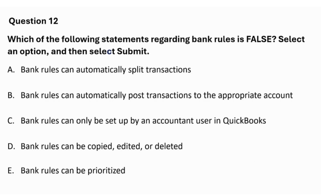Which of the following statements regarding bank rules is false? Select an option and then select Submit. A: Bank rules can automatically split transactions. B: Bank rules can automatically post transactions to the appropriate account. C: Bank rules can only be set up by an accountant user in QuickBooks. D: Bank rules can be copied, edited, or deleted. E: Bank rules can be prioritized. The false statement is C: bank rules can only be set up by an accountant user in QuickBooks.